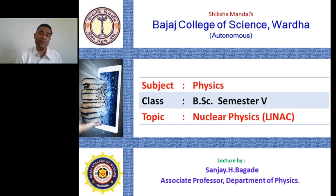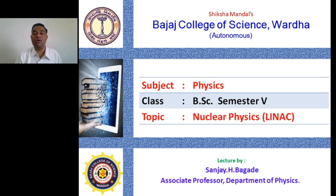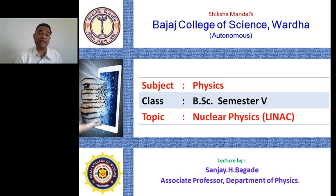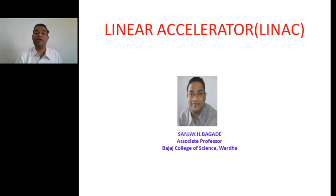Whenever we talk of nuclear physics, the things that come to our mind are nuclear bombs, atom bombs, and all kinds of destructive things. But it is not only about atom bombs or nuclear bombs. Nuclear physics also consists of particle accelerators, particle detectors, nuclear reactions, nuclear reactors, and radioactive decay processes.